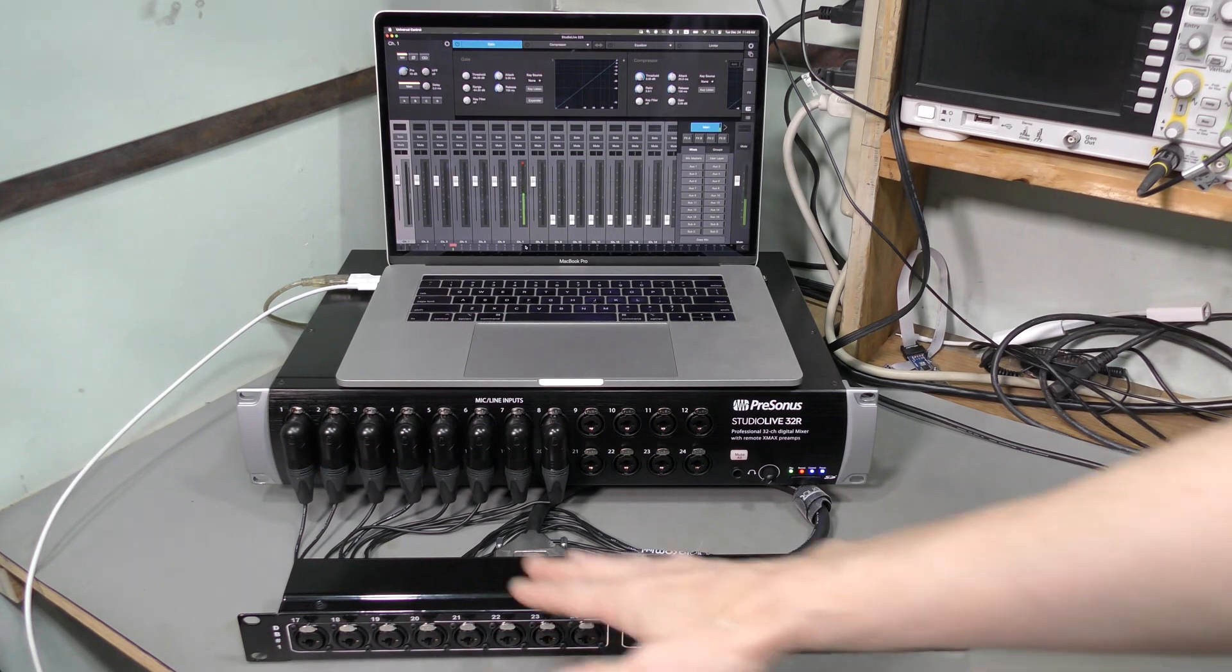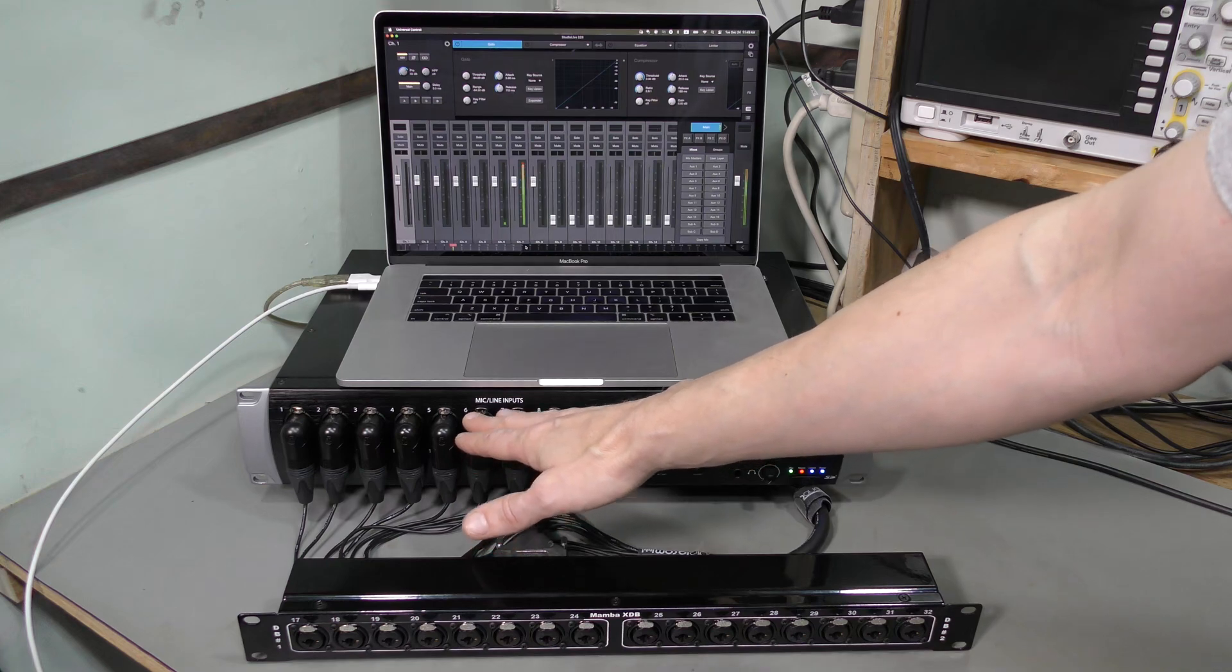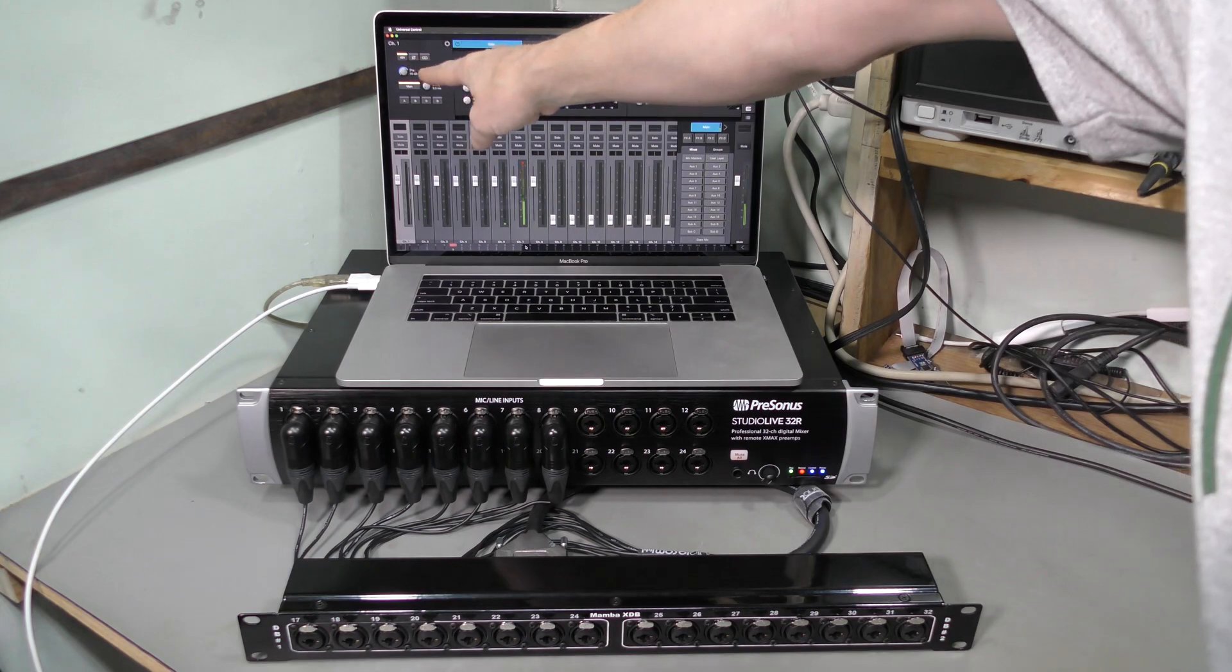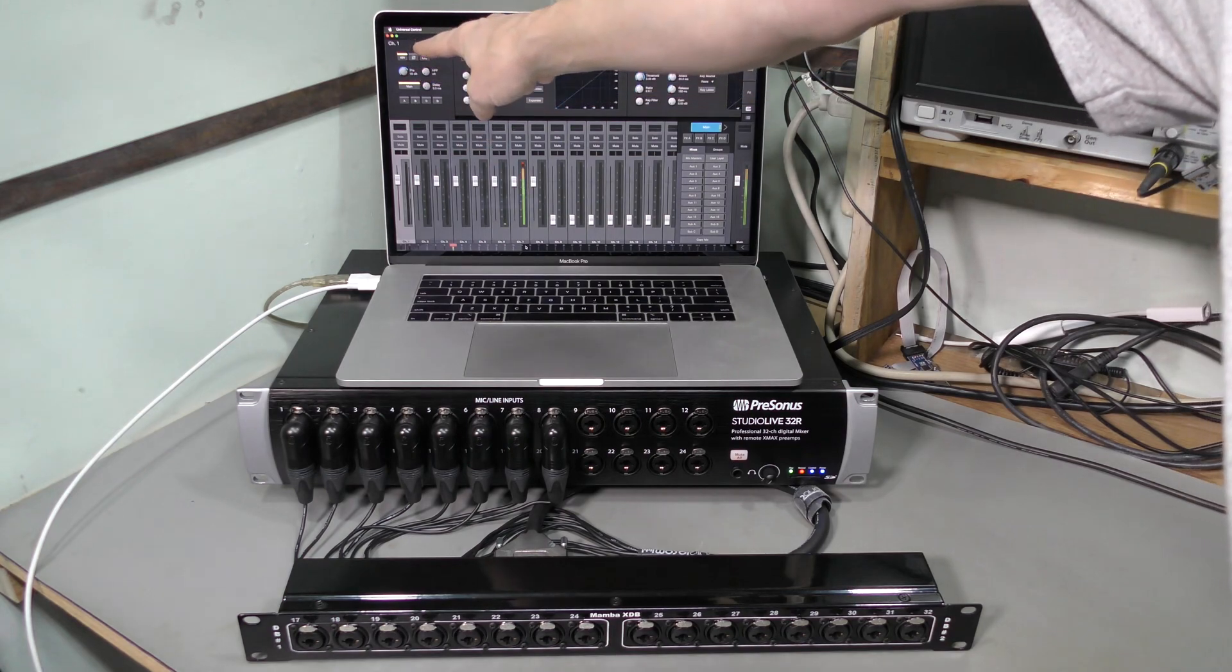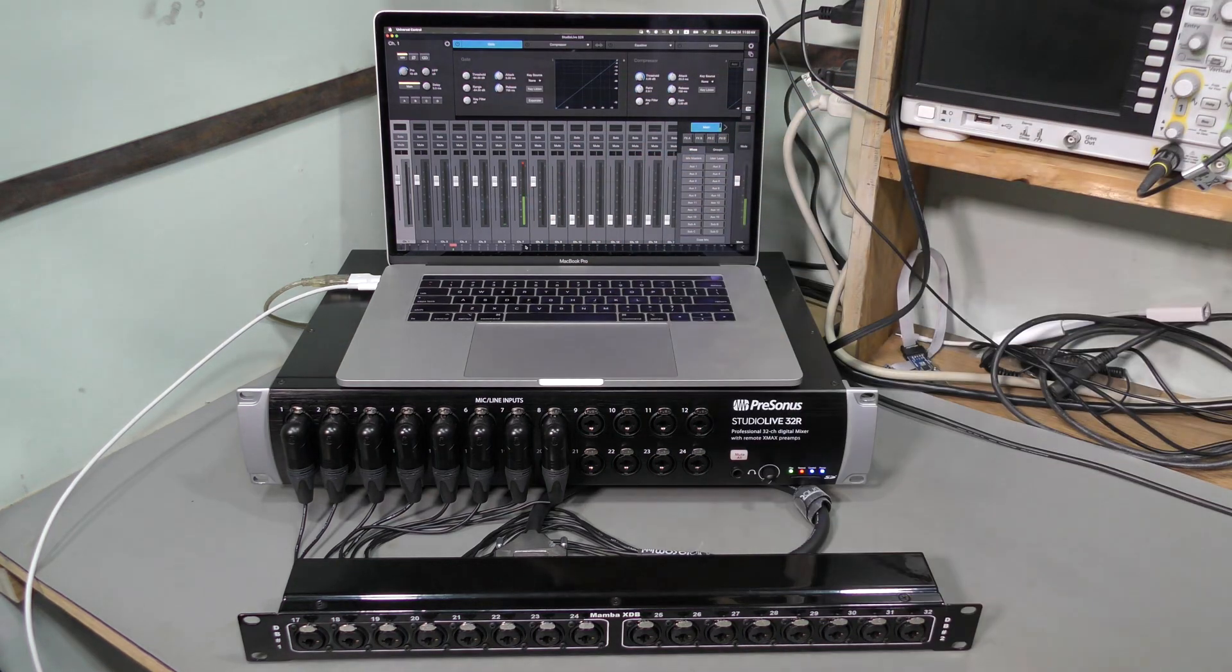So, I connected the first section to the first 8 channels of the mixer and I set the gain in all preamps to 45 dB and most importantly enabled phantom power. And look at this. Random crackling more or less in every channel, but most pronounced in channel 7.